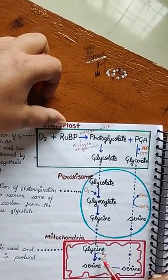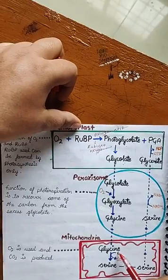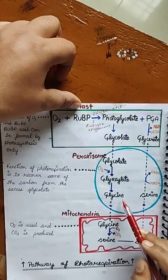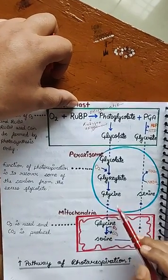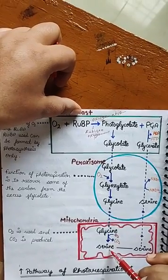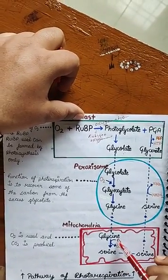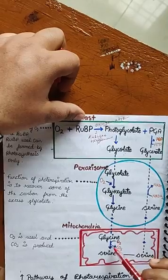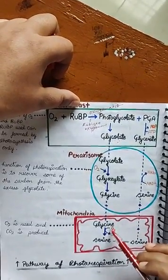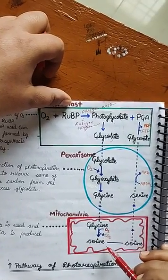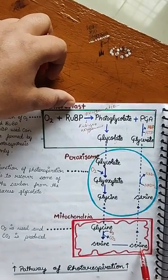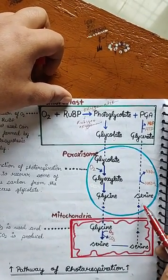जब glycine बन जाएगा, तब ये mitochondria में enter करेगी। Glycine एक type का amino acid है, और जब ये amino acid बन जाएगा, तब ये serine में breakdown होगा। इस दौरान oxygen का use होगा और CO2 release होगी। यहाँ पर carbon कम हो जाएगा।